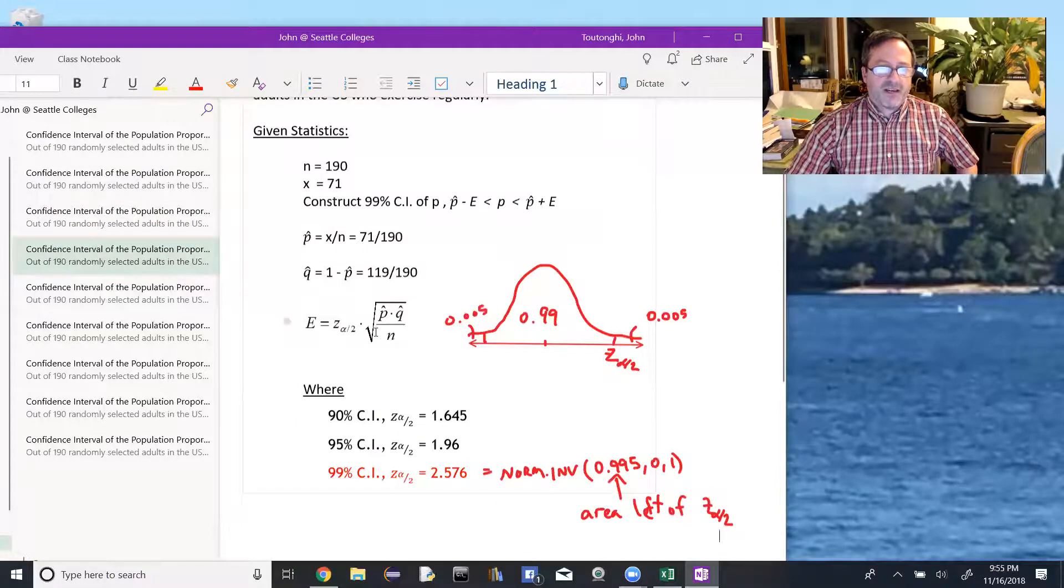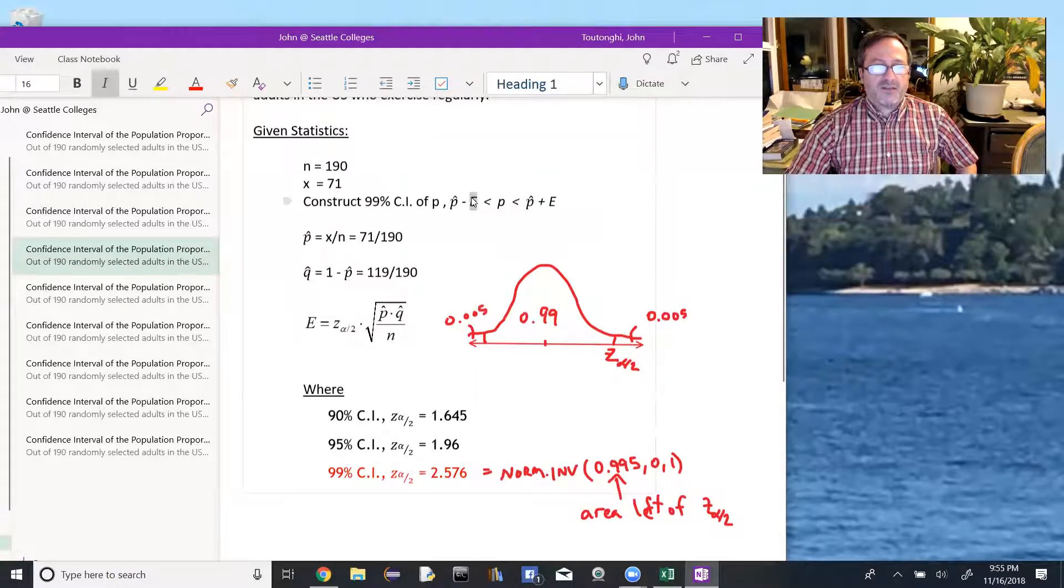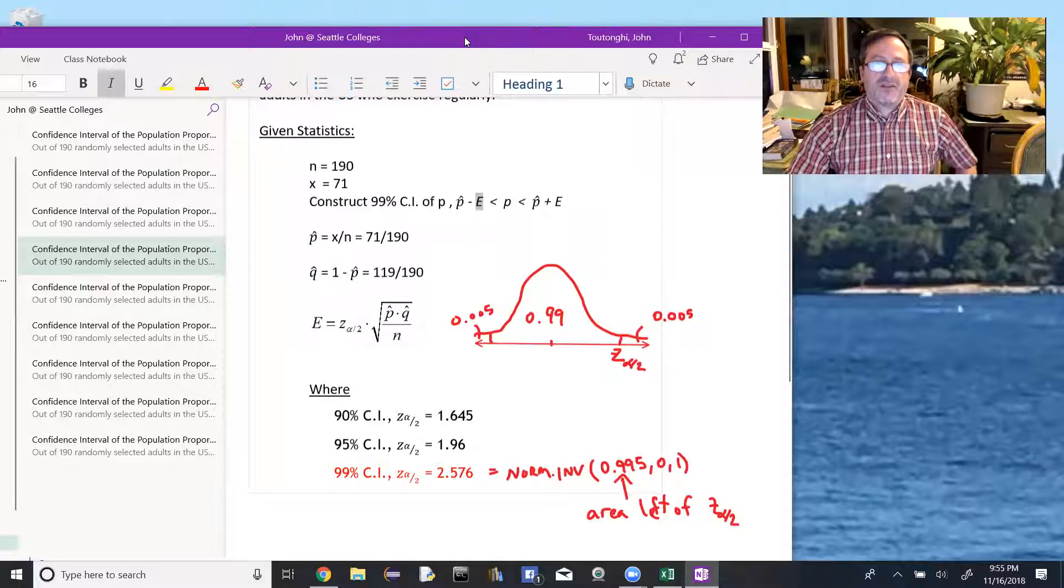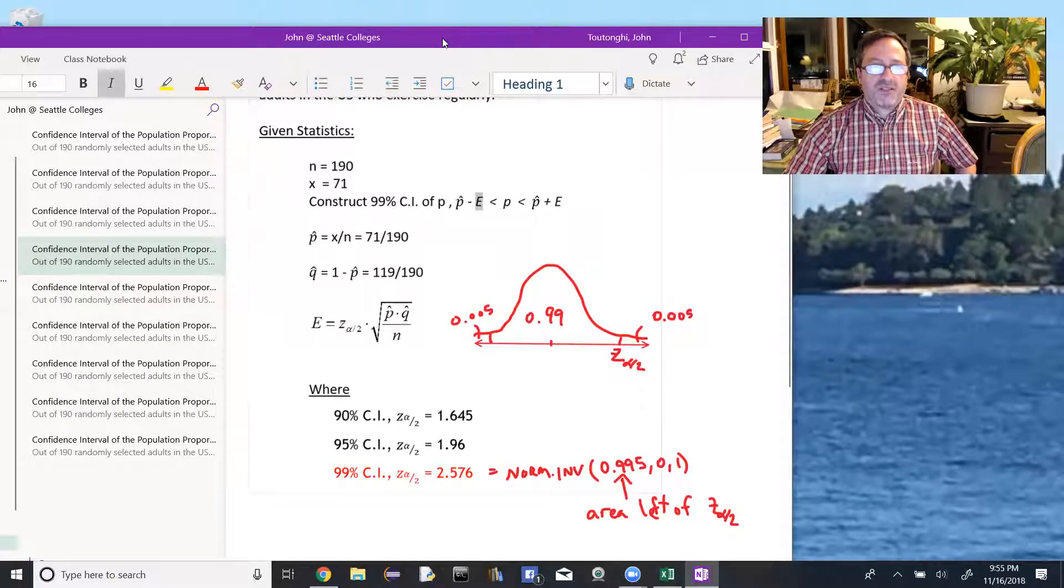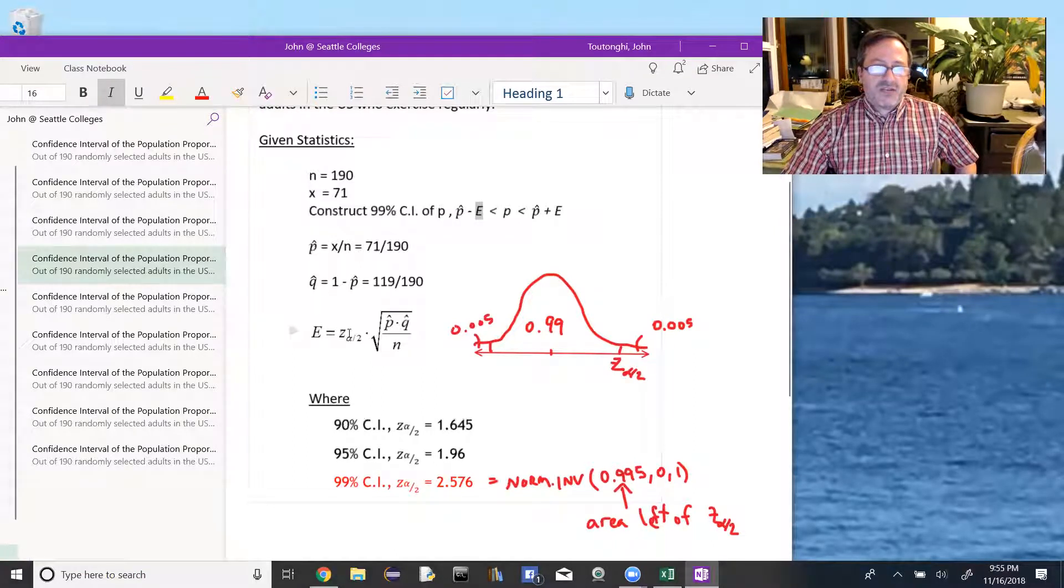The next part is to find our error. To find this error for the mean, we just used Excel. We could use a formula, or we used Excel. For the proportions, we're going to want to use this formula that the error is the z-alpha over 2 times the square root of p-hat times q-hat divided by n.